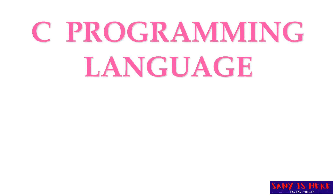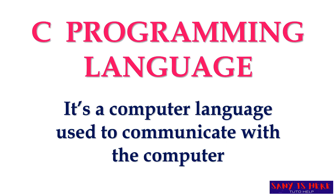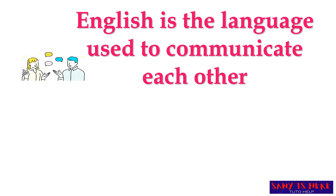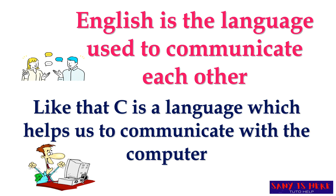C programming language is a computer language which is used to communicate with the computer. For example, when we are talking with people we use a language — English, Hindi, or Kannada — so that we can communicate with them easily and even control them with the language. Like that, we need to learn C language to have control over the computer.